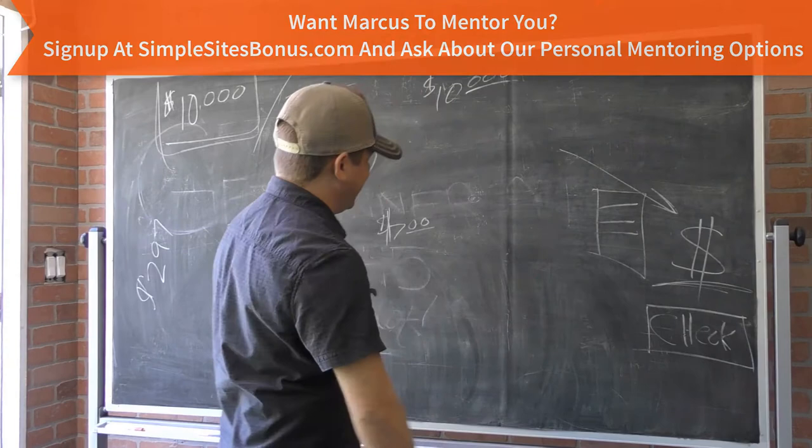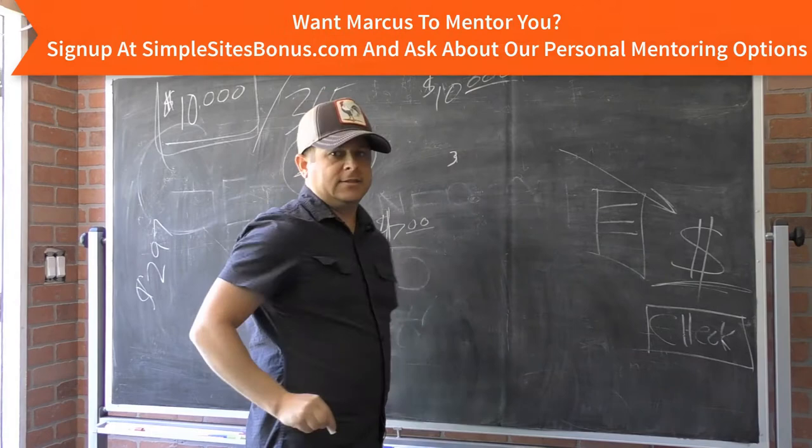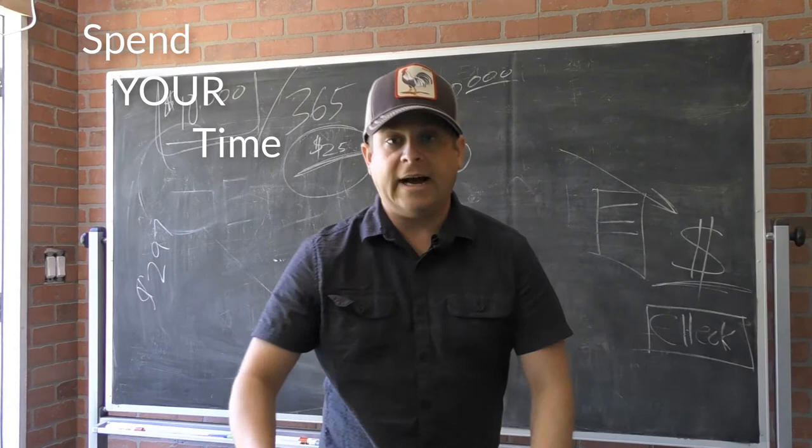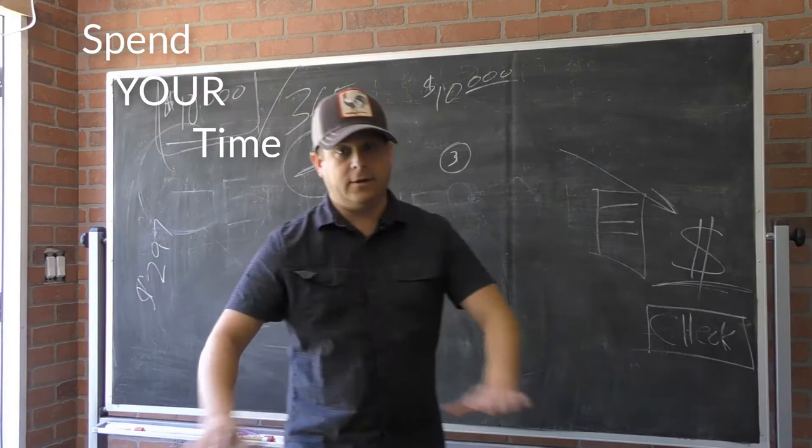He says, you know what? Instead of spending a year to learn all that programming, just learn these three things. It's going to take you a week. You're going to learn these three skills. Now that you have these three skills, boom, I just saved you 362 days. Times that by 25 bucks, which is like the lowest amount. And boom, you're starting to get the picture here.